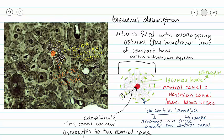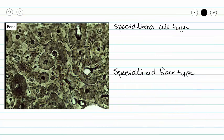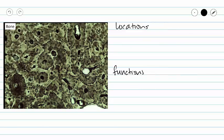Now that we have a general idea of what we're looking at, let's talk about some specifics. The specialized cell type we see in compact bone is the osteocyte — the only one we're going to see in this kind of view. Our specialized fiber type is going to be collagen, embedded in that hard matrix that makes up our concentric lamellae, and it provides some flexibility to our bones.